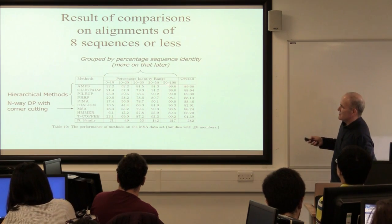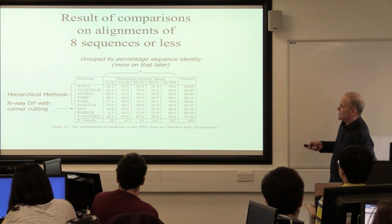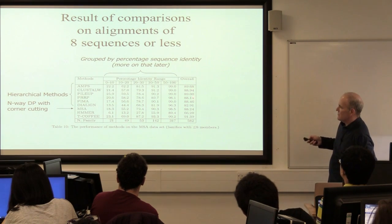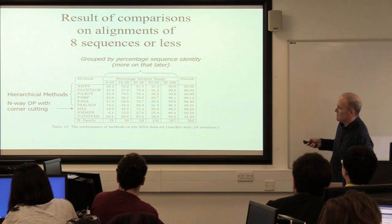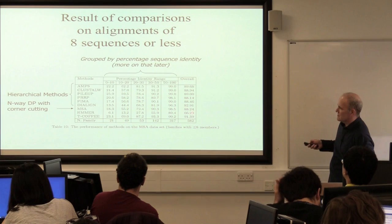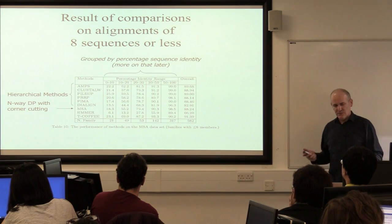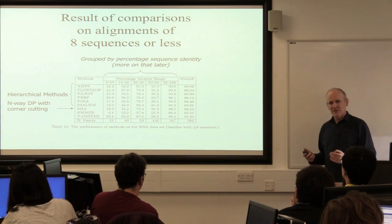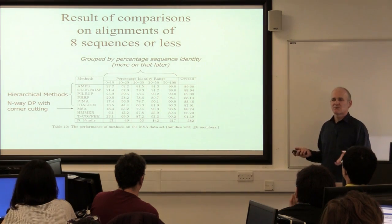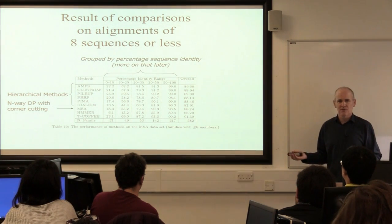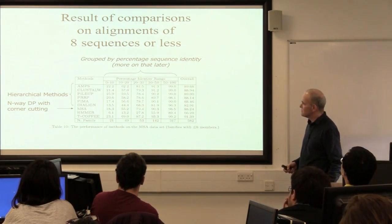The take-home message is the overall accuracy. This divides up different methods — not all of these are contemporary; some people don't use anymore. ClustalW is still around, and T-Coffee is still used widely, and you can get to both of these in Jalview. Looking at percentage identity range for each group of sequences, if you look at the accuracy numbers, they're all around 90%. So the message is: all of these methods produce pretty good alignments overall.